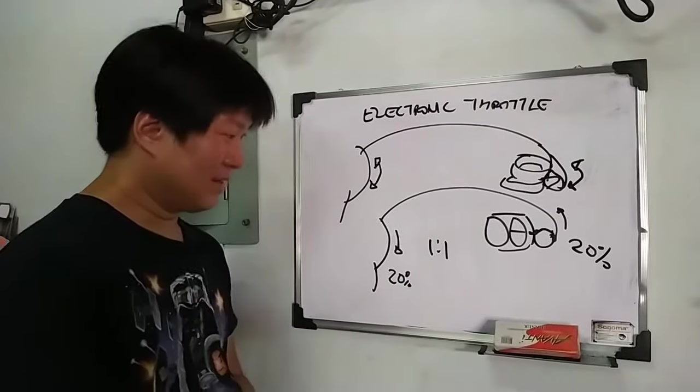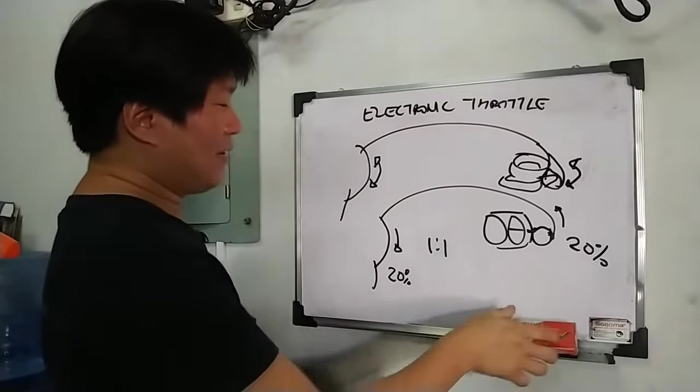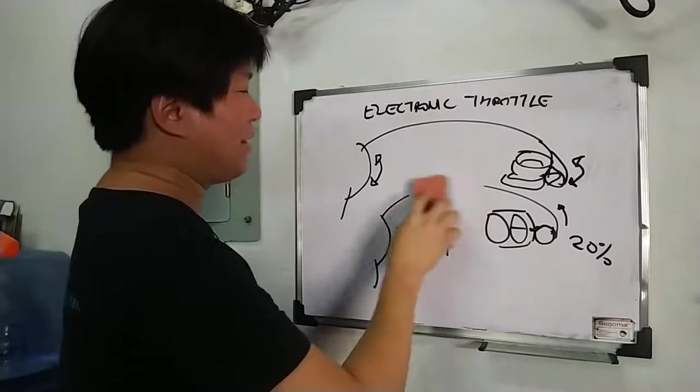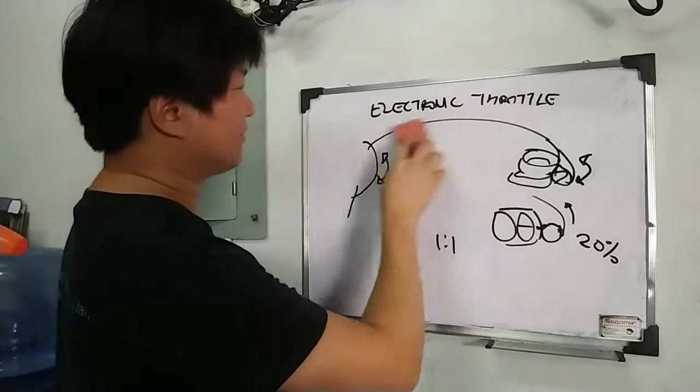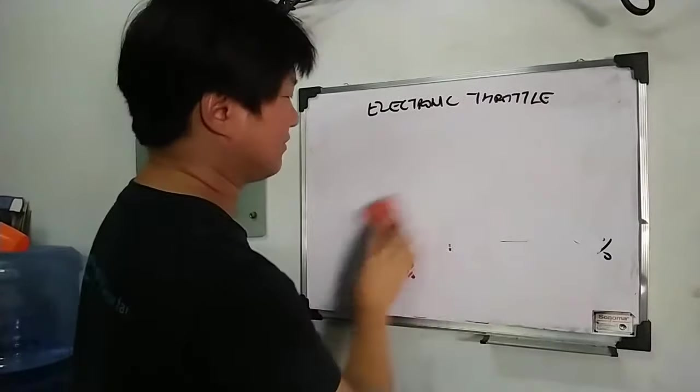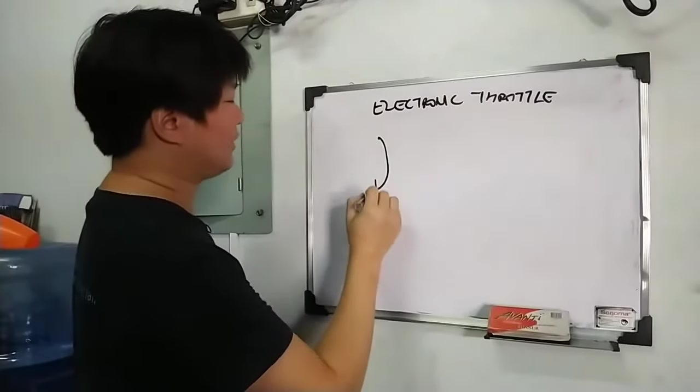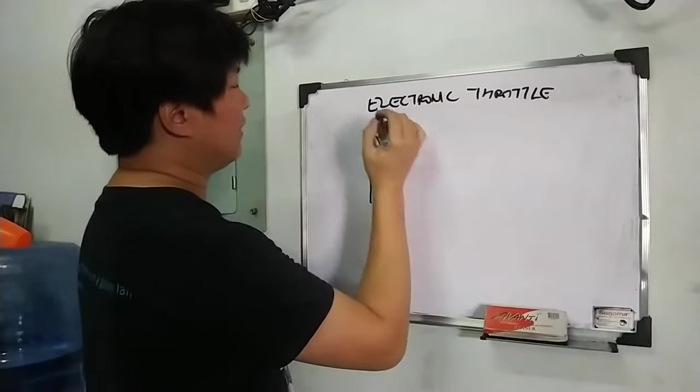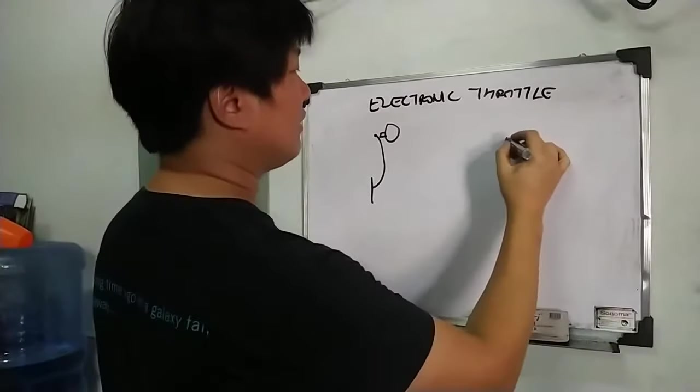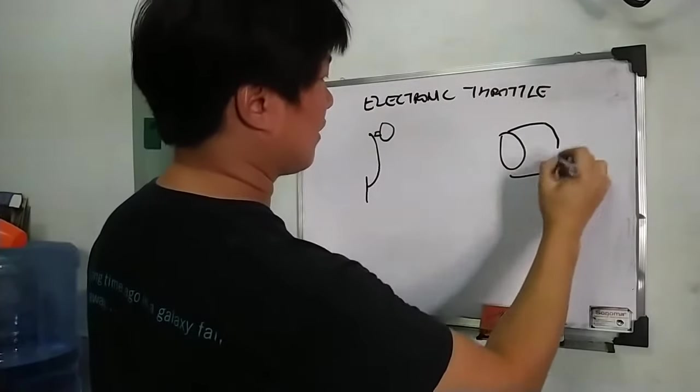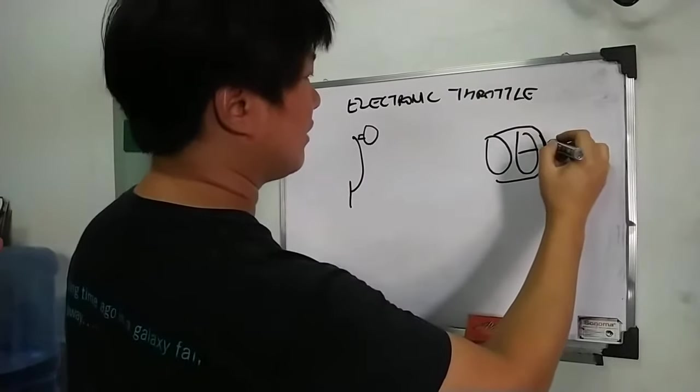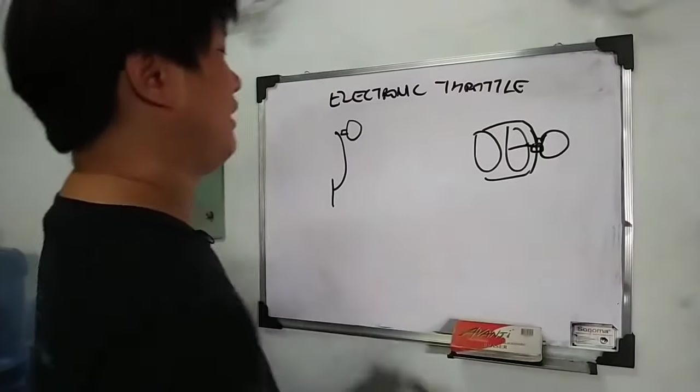Simple enough. But nowadays, wala na ito. No cable anymore. Instead, what we get, there's a pedal here. There's a rotation sensor here. This is your throttle. Throttle plate. There is a motor here.